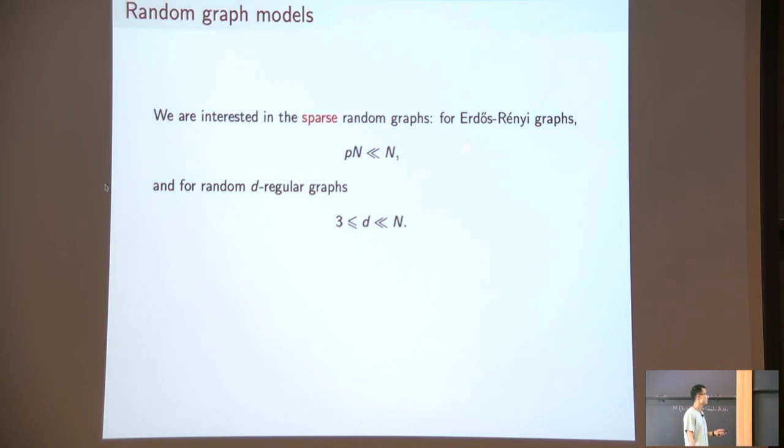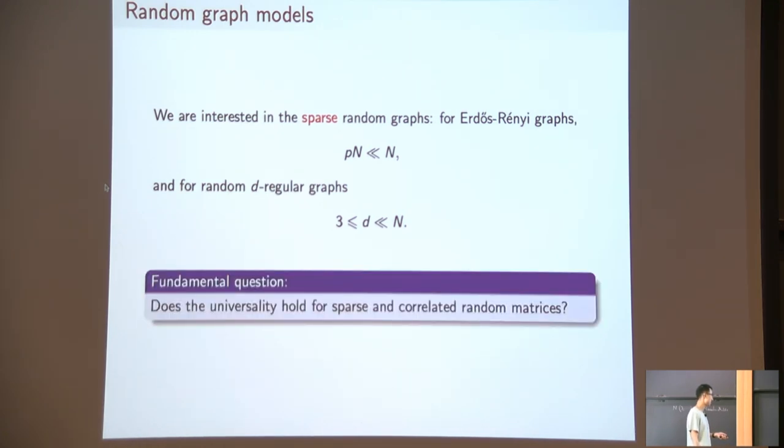But the case I'm interested in is the sparse regime, especially for the Erdős-Rényi graph, we want the average degree much smaller than n. Or for the d-regular graph, we want the degree d much smaller than n. If you think about a three-regular graph, the adjacency matrix, each row has only three non-zero entries, all other entries are 0. They look very different from the Gaussian orthogonal ensemble, for which all the entries are almost surely non-zero. The fundamental question I want to answer is, does the universality still hold, a quantity like this, is it still universal for those sparse and possibly correlated random matrices?